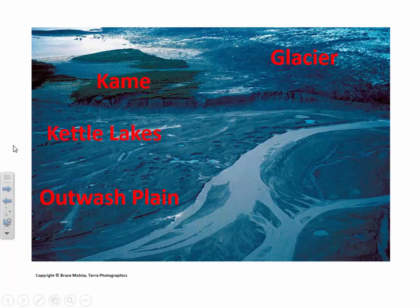Scattered around the outwash plain there would have been a number of these glacial kettle lakes. The smaller lakes would have very quickly filled in with sediment and disappeared. But the larger kettles, like Edinburgh Lake, Lake LaBeouf, and Lake Pleasant, still exist today.